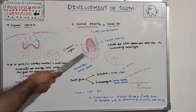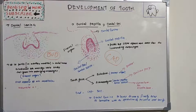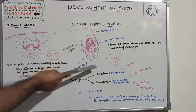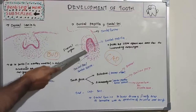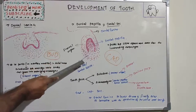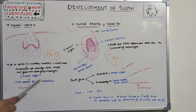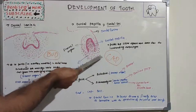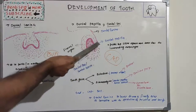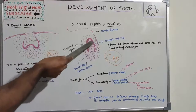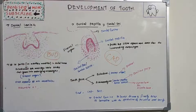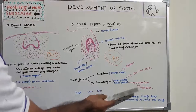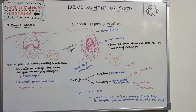The dental sac or dental follicle surrounds both the enamel organ and dental papilla. It consists of ectomesenchyme cells and fibers surrounding the dental papilla and enamel organ. The dental lamina will become rudimentary as it detaches while the tooth grows. From the dental follicle or dental sac, cementum, periodontal ligament, and alveolar bone form.